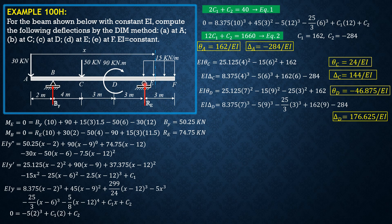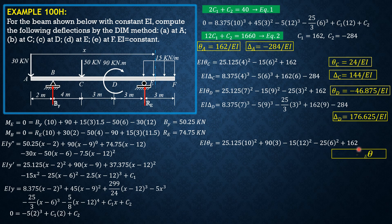At E, we only find theta because Y equals 0 at E. With X equals 12: EI theta E equals 25.125(10) squared plus 90(3) minus 15(12) squared minus 25(6) squared plus C sub 1 which is 162. So theta E equals negative 115.5/EI.